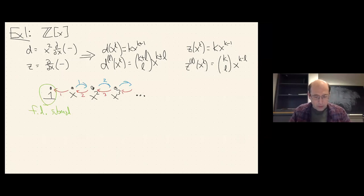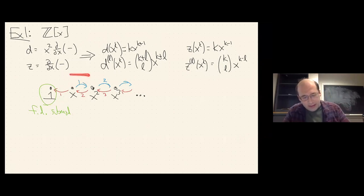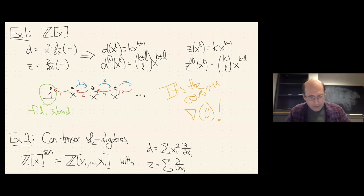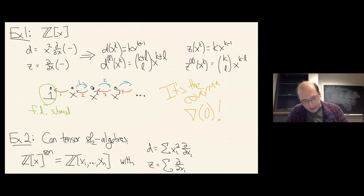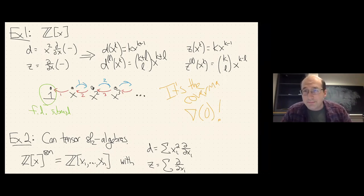What does this look like as an SL2 representation? You have a basis of monomials. Both D and Z kill the identity, as anything satisfying the Leibniz rule must. This gives you a finite dimensional submodule. The rest of D and Z act on the rest, and you can see this SL2 module is a co-Verma — exactly the co-Verma that has the trivial submodule. It's not a Verma module; it's a co-Verma module. In example two, you can tensor together SL2 algebras because we know how to tensor SL2 modules. Taking the n-fold tensor power gives a polynomial algebra in n generators, and the total raising and lowering operators are the sum over all i of d/dx_i. Viewed as an SL2 module, it's a tensor product of co-Vermas.